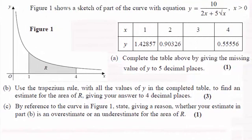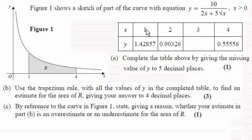Hi there. Now here we've got a question based on the Trapezium Rule. We have this curve given by the equation y equals 10, all divided by 2x plus 5 root x. There's a table of values for x and y at intervals of one unit. The first question is to complete the table, giving y to 5 decimal places when x equals 3.